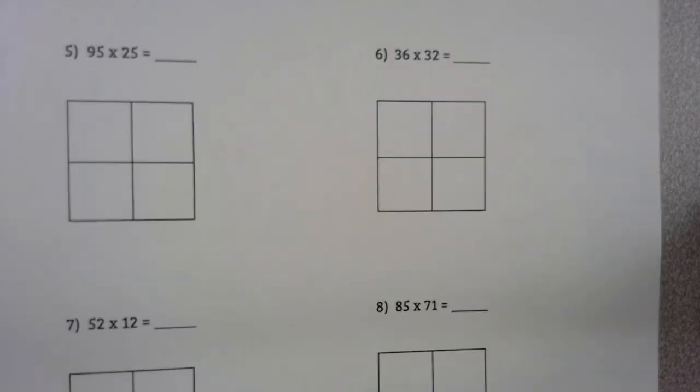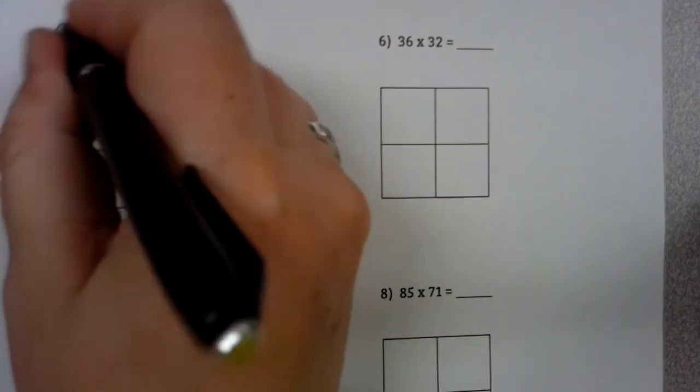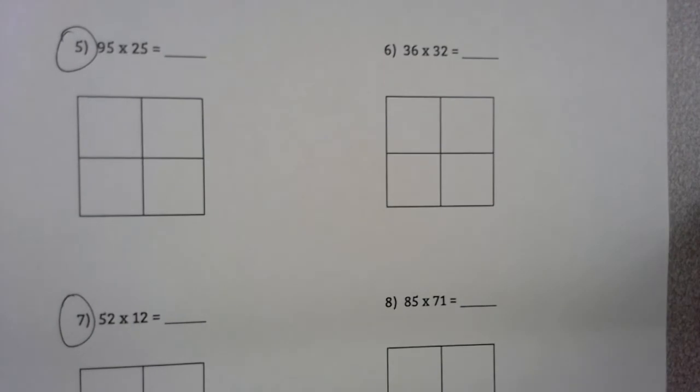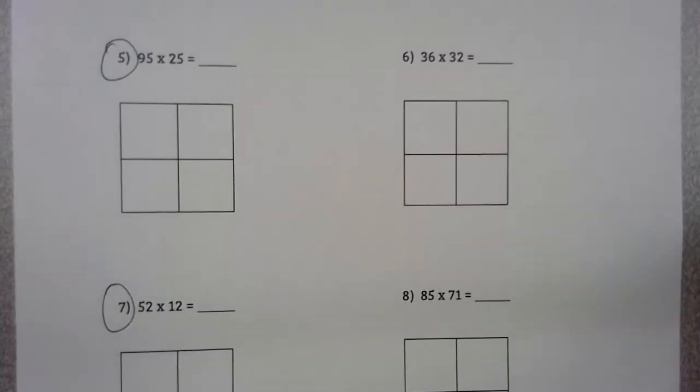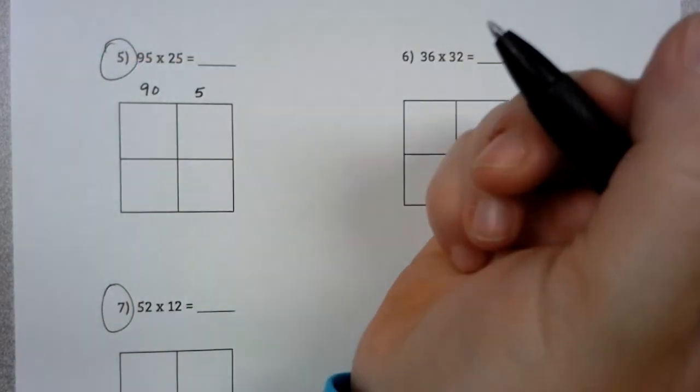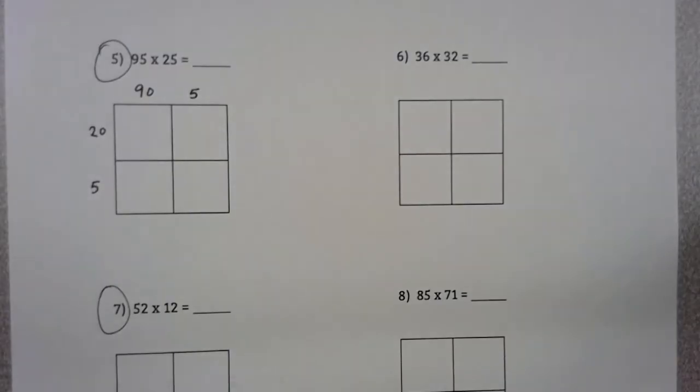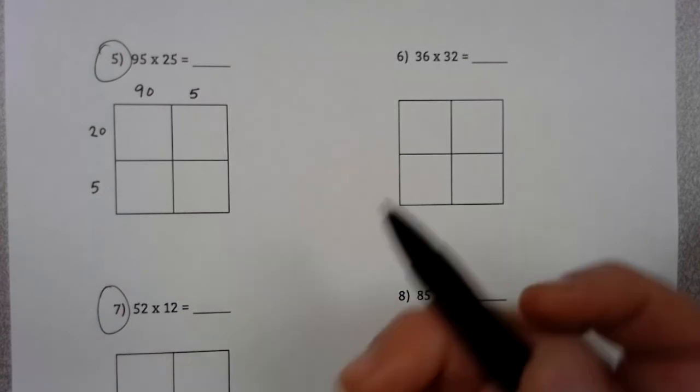With the area model, what's going to happen is we have six problems on here. I'm going to do three of them with you, and you're going to be required to do the other three. The three that I'm doing are the odds. So we're going to be doing the odds together, and you are going to be responsible for completing the evens. So that's 6, 8, and 10.